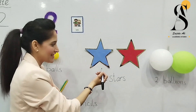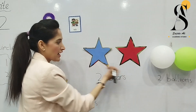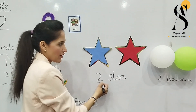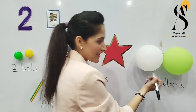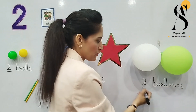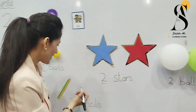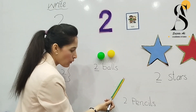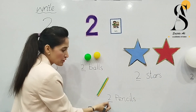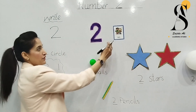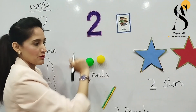Star — how many stars? One and two. Two stars. How many balloons are here? One and two. We have two balloons here. Let's count the pencils — one and two. Two pencils. And here you can see two kids — one and two.